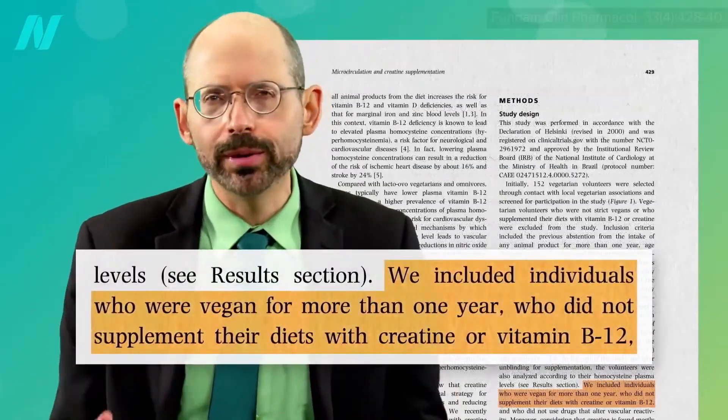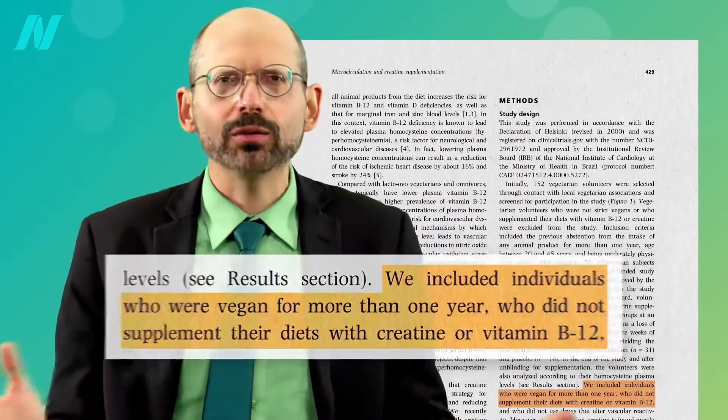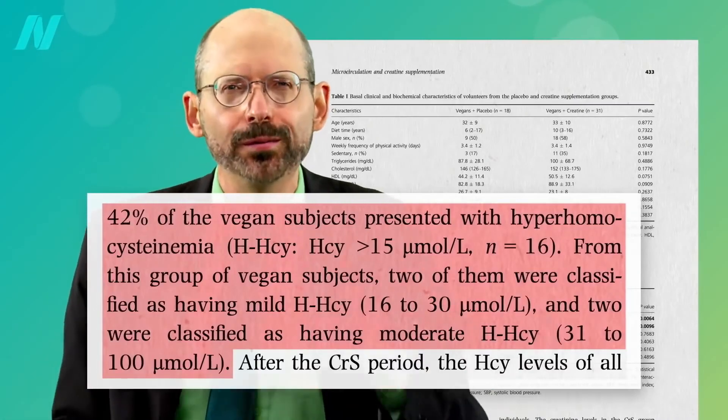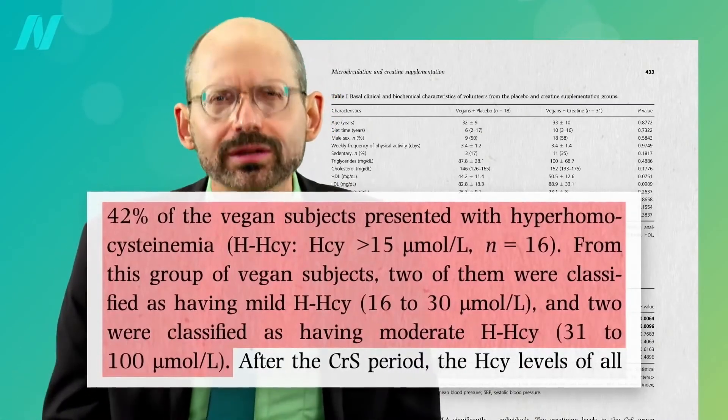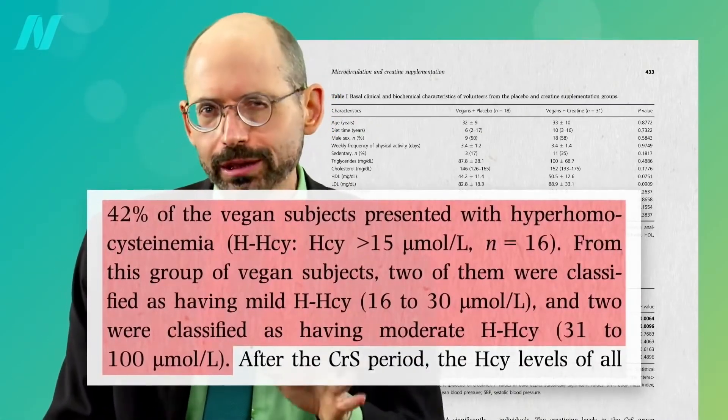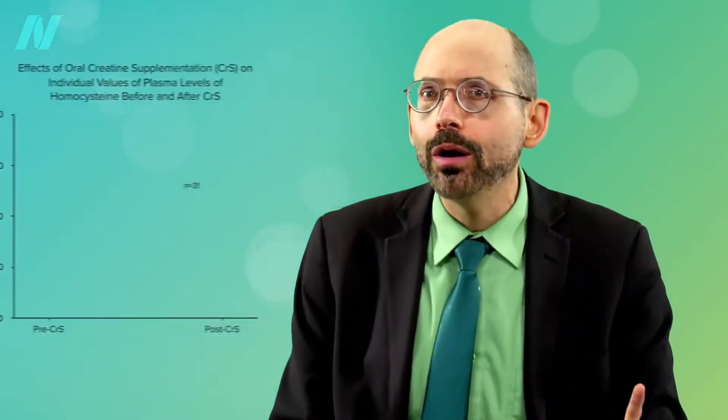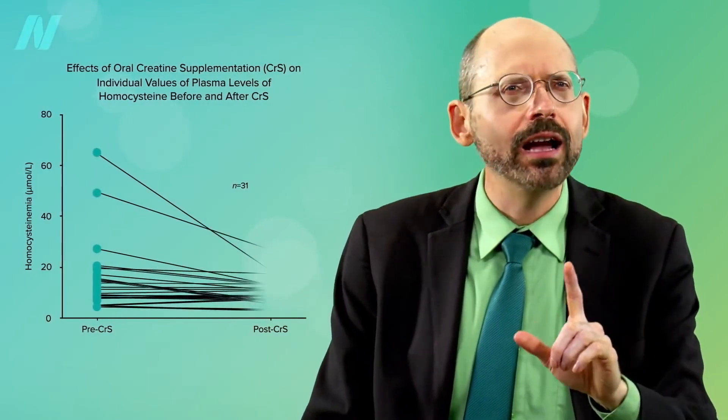They took a bunch of vegans who were not supplementing their diets with vitamin B12, so some of their homocysteine levels were like through the roof. A few as high as 50, when the ideal was more like under 10. But after taking some creatine for a few weeks, all of their homocysteine levels normalized before and after.